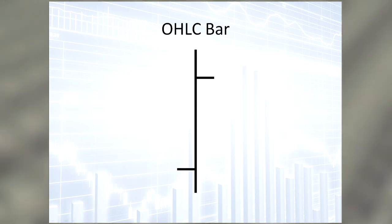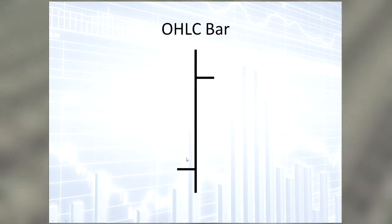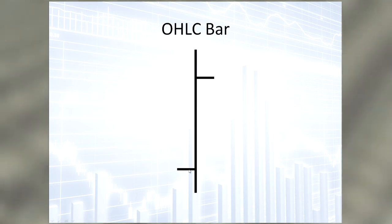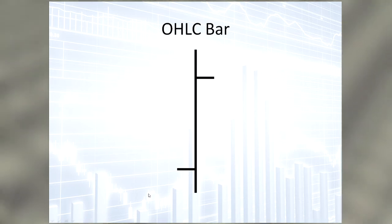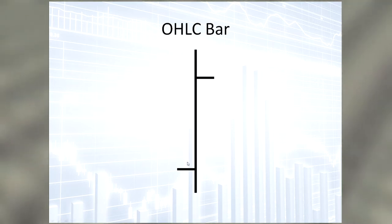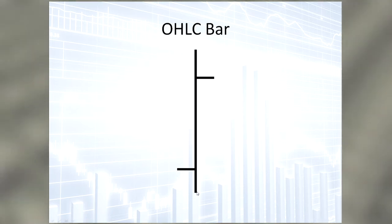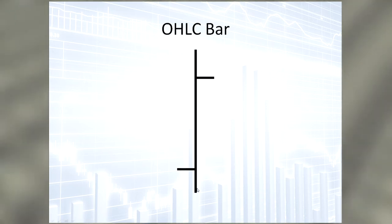If the dash on the left is lower than the one on the right, it is a bullish bar, meaning the price movement is going up. If the dash on the left is higher than the one on the right, it is a bearish bar, meaning the price is going down. For example, we can see the opening price right here on the left. The stock price probably moved up to the high before going back down to the low, where it once again turned around as more buyers came in before closing right over here.